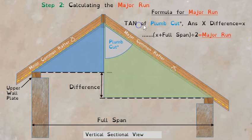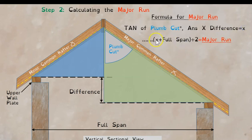Here's the rest of the formula. You hit the TAN button, type in the 55 degrees, hit equals to get your answer first. Then multiply it by the difference. After you've done that, do this calculation within the brackets first: take X plus the full span, find the answer to what's in the brackets first, then divide by 2, hit equals, and that is your major run. It's not a very complicated formula really.